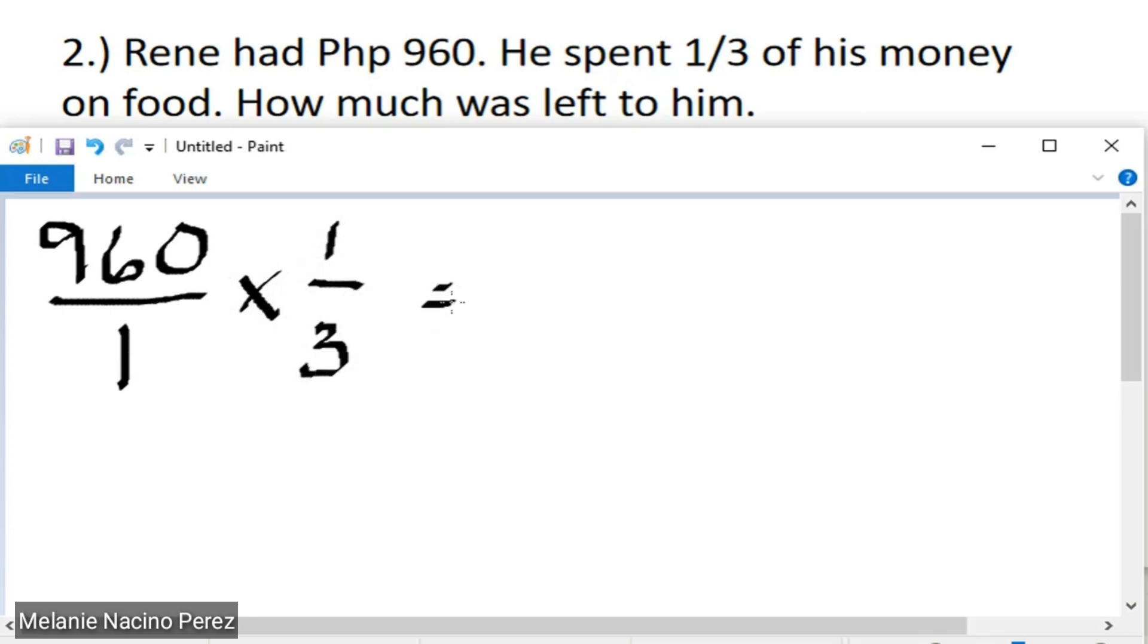So again, numerator to numerator, 960 multiplied by 1 is equivalent to 960. And then, 1 times 3 equals 3. So, the 1 third of 960 is 320, which is the money that was spent by Rene. So, 320 pesos was spent by Rene.